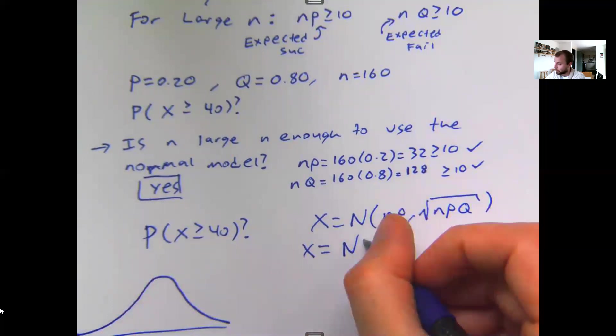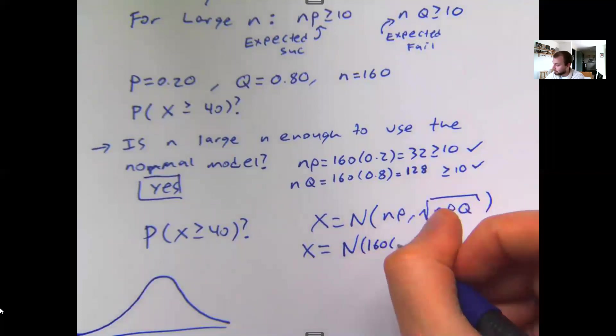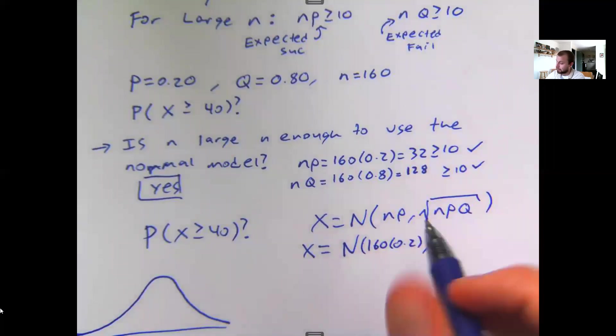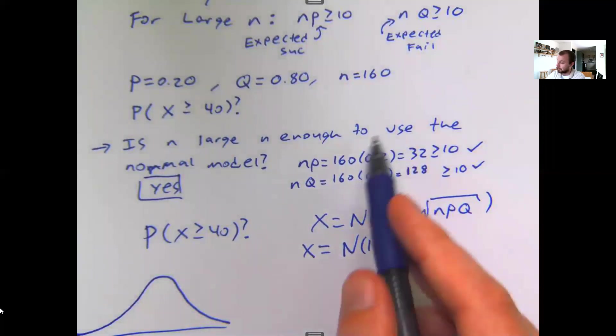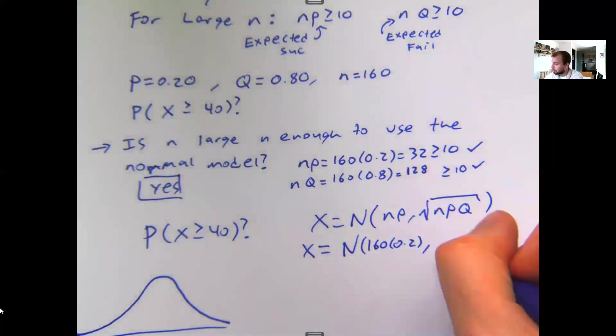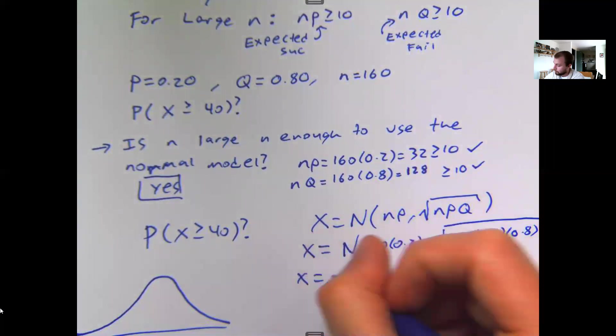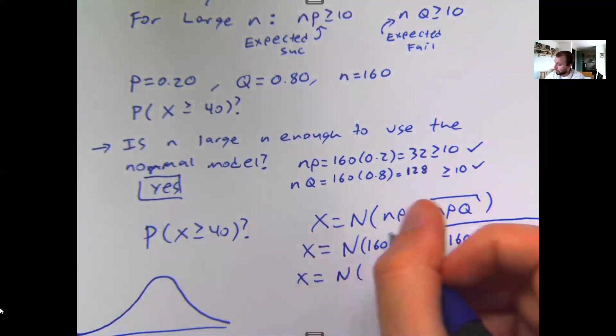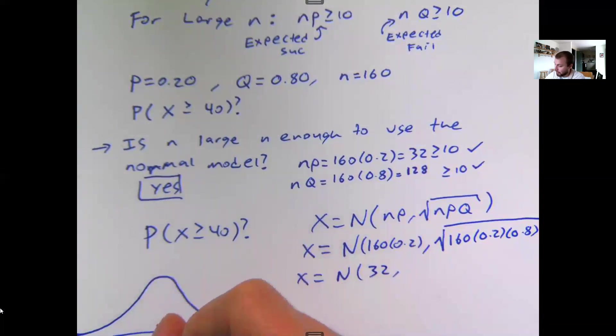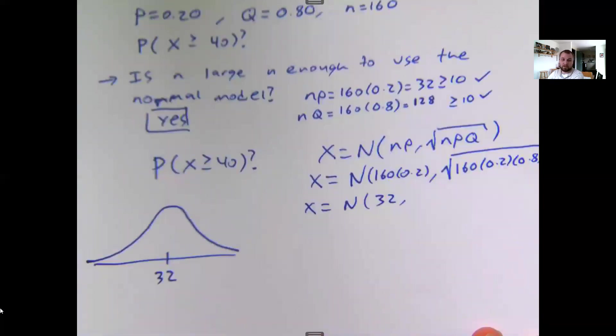Now lowercase n, that's my number of samples, that's 160. p, that's my success rate of 20%. And I already did n times p in this earlier step, so I actually know what this number is. My standard deviation is 160 times my success rate, 20%, times my failure rate, 80%. When I typed this part into my calculator earlier, I got 32. So that means on my curve here, I'm anticipating 32 wins.